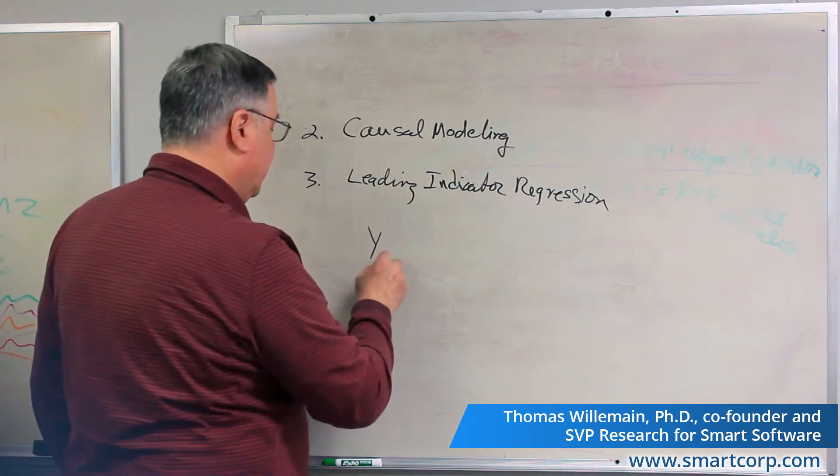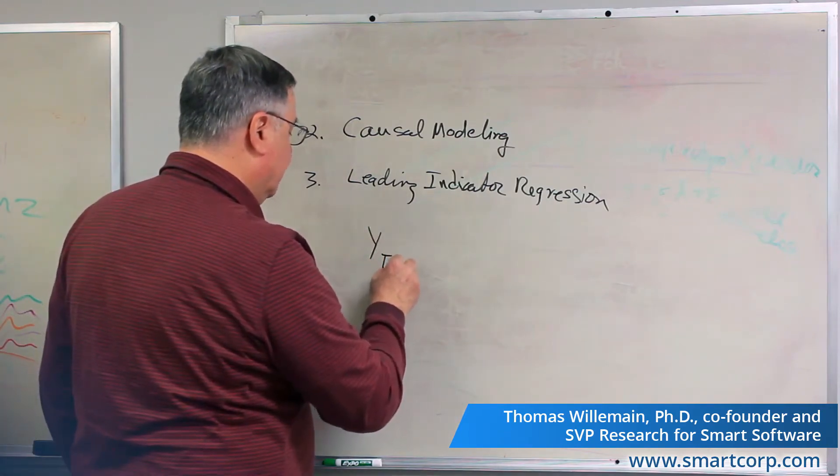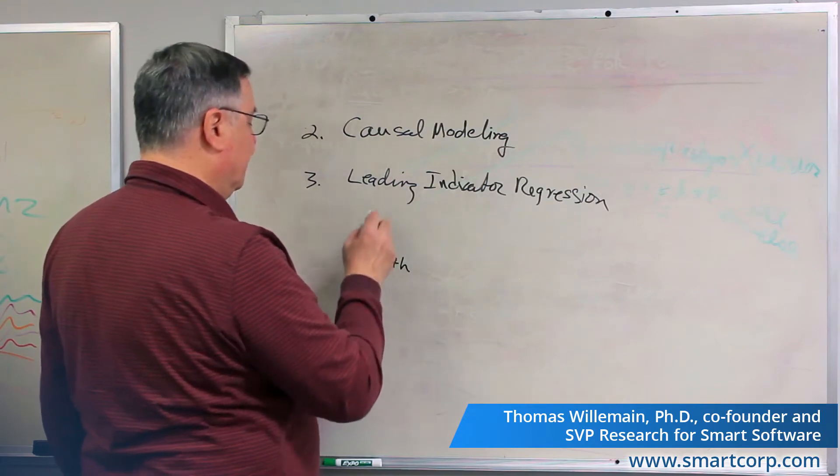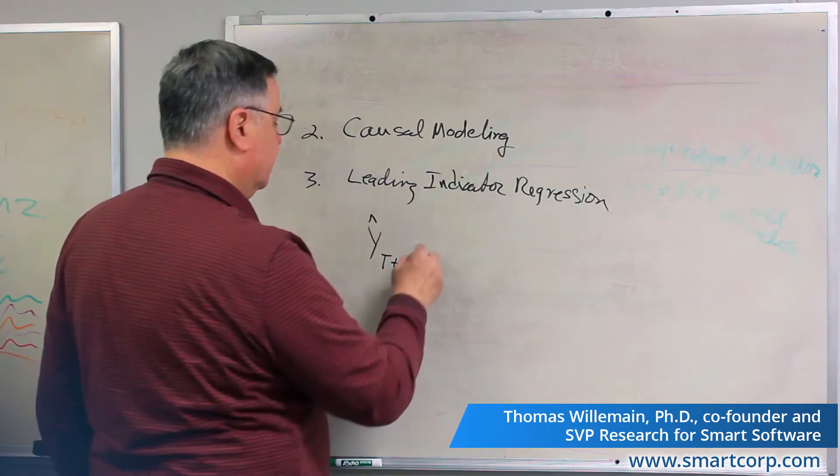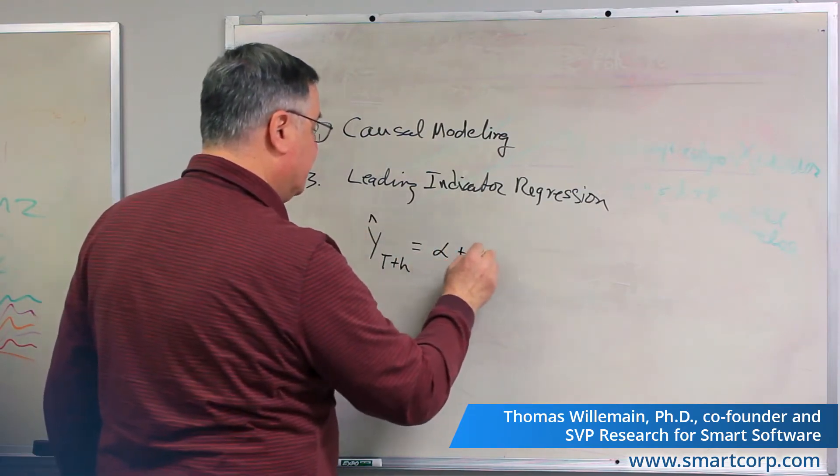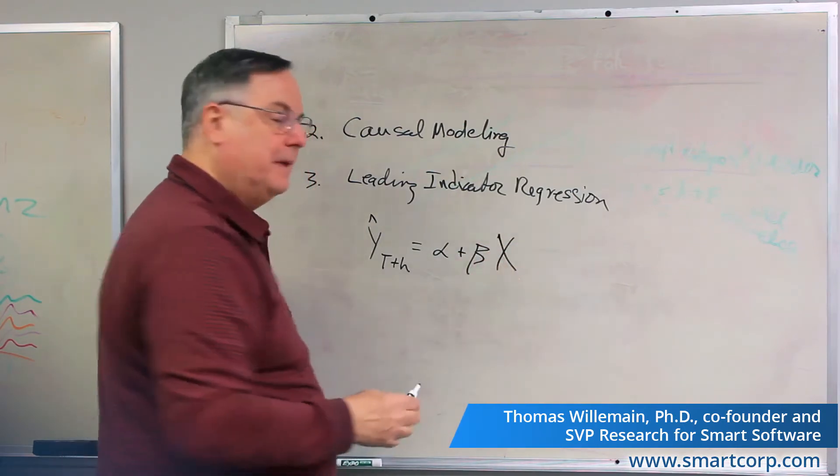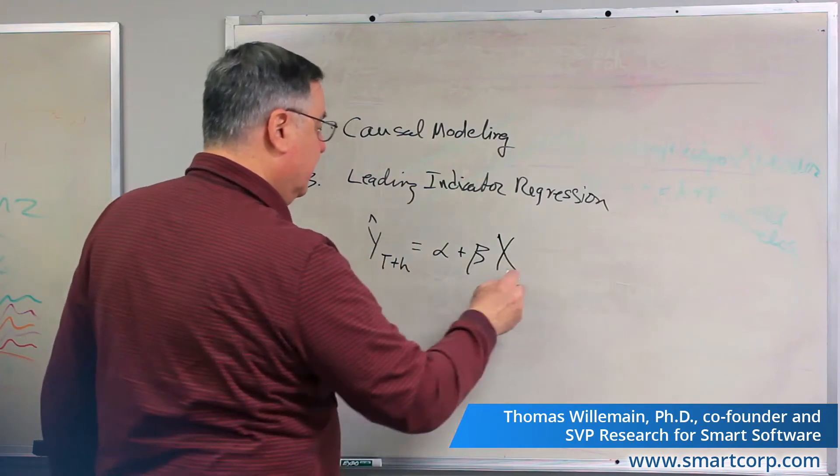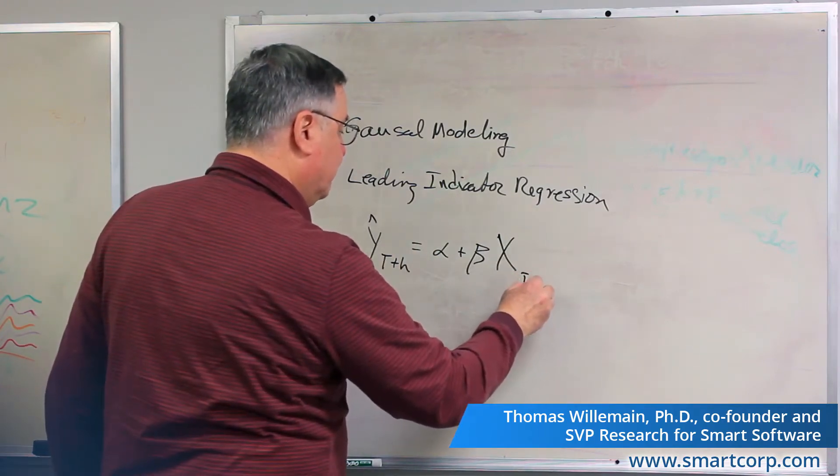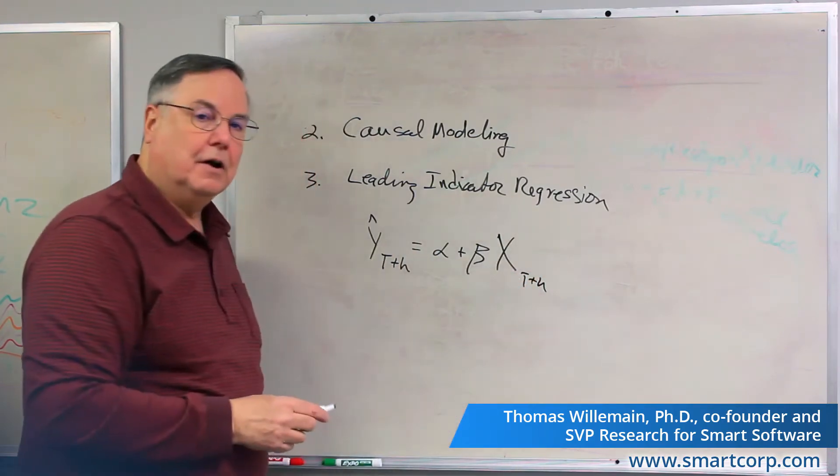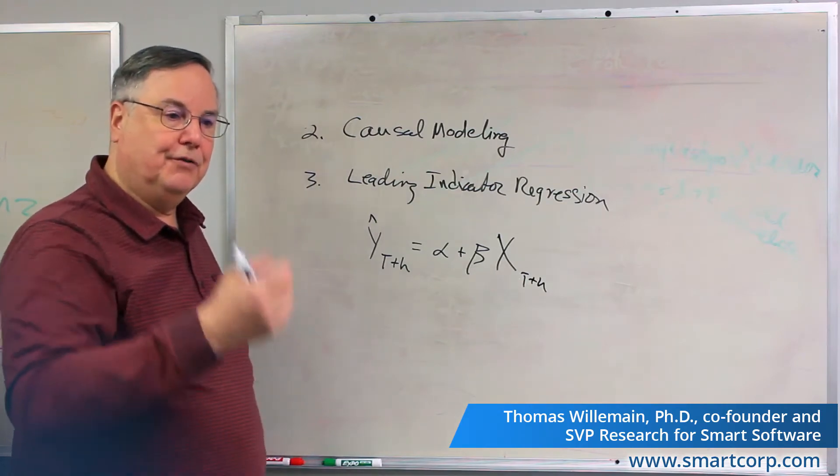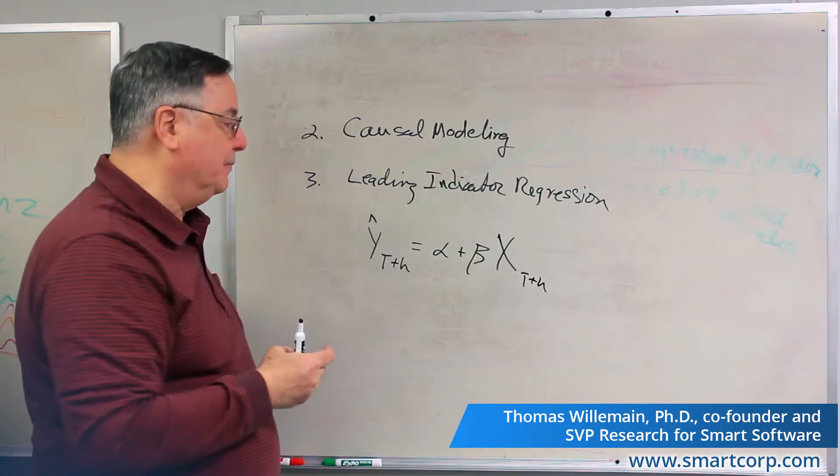We want to forecast y at some future time, say t plus h, and we're predicting it. We're going to have a regression equation and we're going to use some x, some other variable, to predict it. But that variable has to be known at a future time as well because they're always measured at the same time.